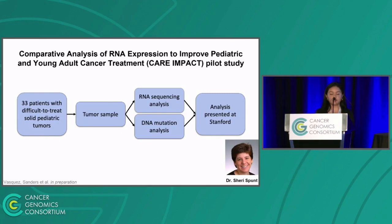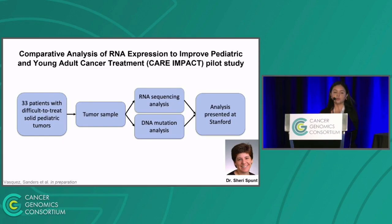With Dr. Sherry Spunt, as well as other pediatric oncologists at Stanford, we partnered together to launch the CARE Impact Study. This was a study where we recruited 33 patients with difficult-to-treat solid pediatric tumors, most of which had already exhausted standard-of-care treatments. For each patient, we looked at DNA mutation data as well as RNA sequencing data, and we identified mutations, fusions, and highly expressed genes for each patient, then filtered that list for clinically actionable targets — things that could be targeted with an FDA-approved therapy or where the patient could be enrolled on a clinical trial. We then suggested potential therapies for each patient to Stanford clinicians who ultimately carried out clinical decisions.